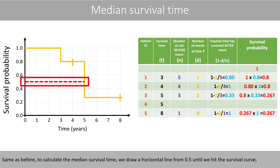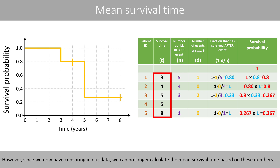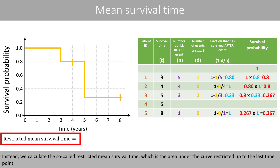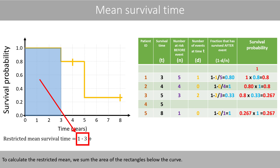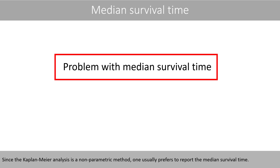To calculate the median survival time, we draw a horizontal line from 0.5 until we hit the survival curve, and then a vertical line to the time axis — the median survival time is five years. However, since we now have censoring in our data, we can no longer calculate the mean survival time based on these numbers. Instead, we calculate the so-called restricted mean survival time, which is the area under the curve restricted up to the last time point. The restricted mean survival time is in this example equal to 5.4 years. Since Kaplan-Meier is a non-parametric method, one usually prefers to report the median survival time.